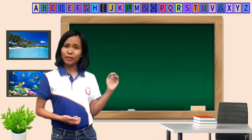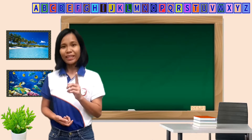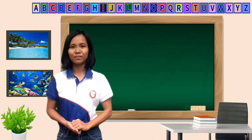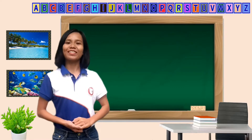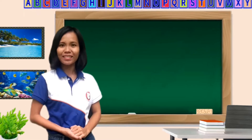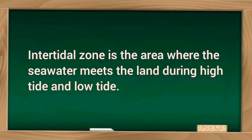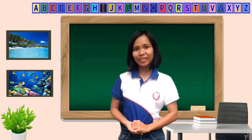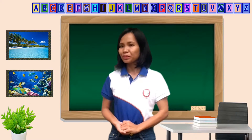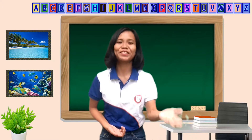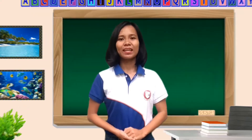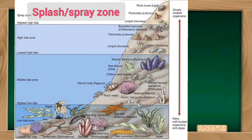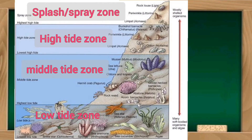So, class, based on that video, what is the intertidal zone? Intertidal zone is the area where the seawater meets the land during high tide and low tide. What are the sub-regions or sub-zones in the intertidal zone? Splash or spray zone, high tide zone, middle tide zone, and low tide zone.